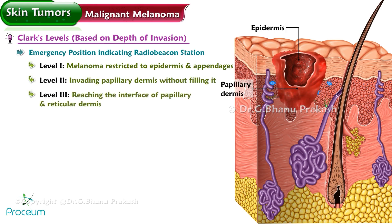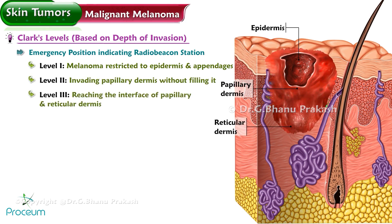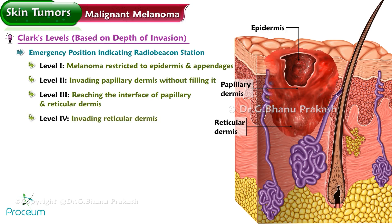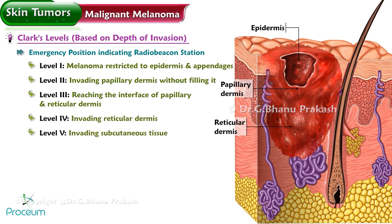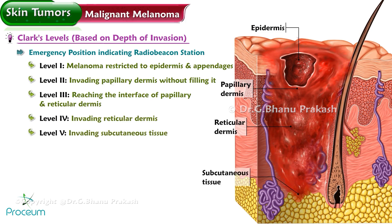Clark's levels of invasion: Level 3 reaches the interface of the papillary and reticular dermis. Level 4 invades the reticular dermis. Level 5 invades subcutaneous tissue.